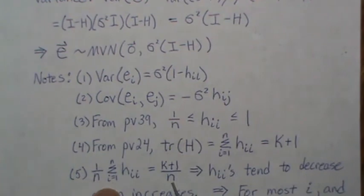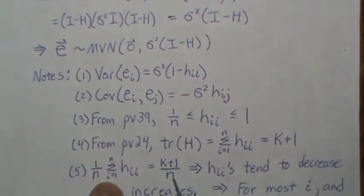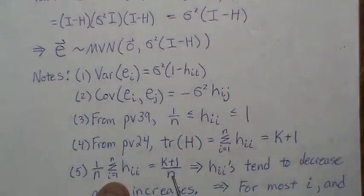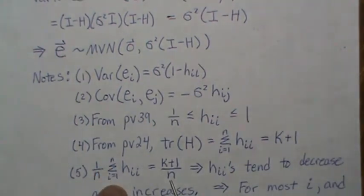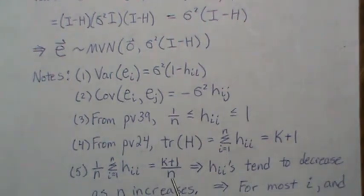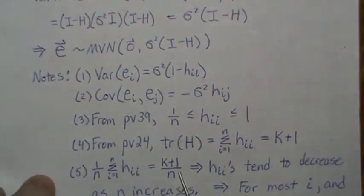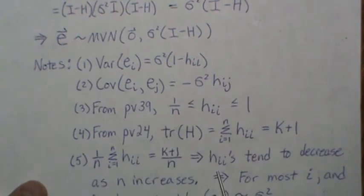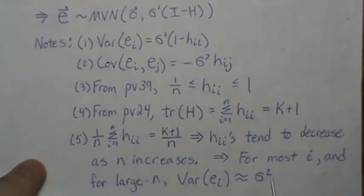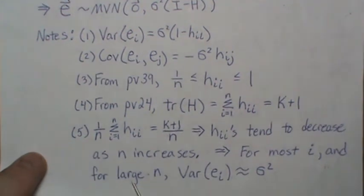Now if we divide both sides by n, we're going to look at the average diagonal element, which is equal to k plus one over n. So if we let n go to infinity, the average diagonal element goes to zero. That means the h i's tend to decrease as n increases, and this is for most i and for large n.